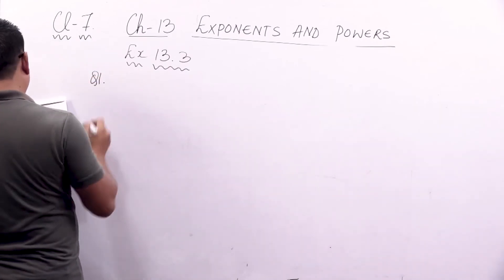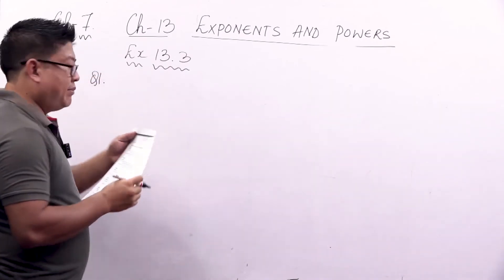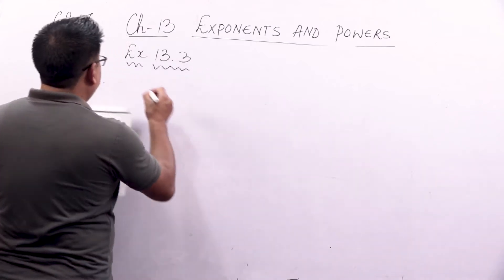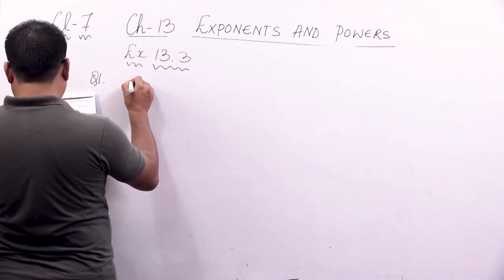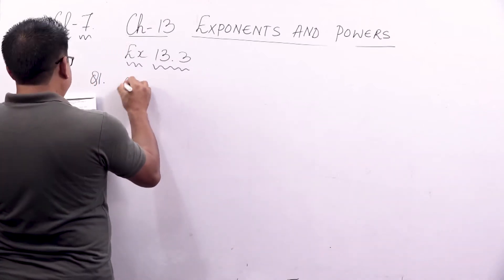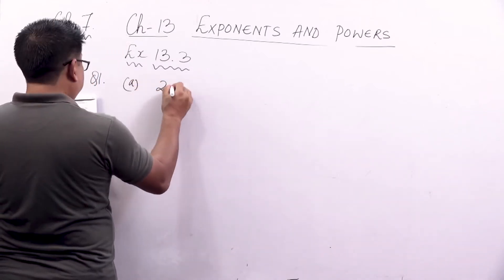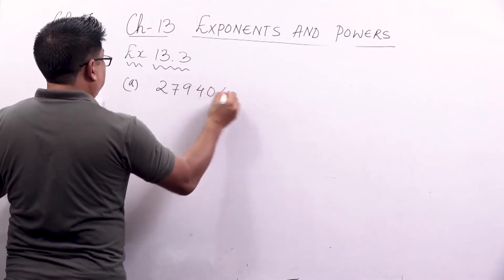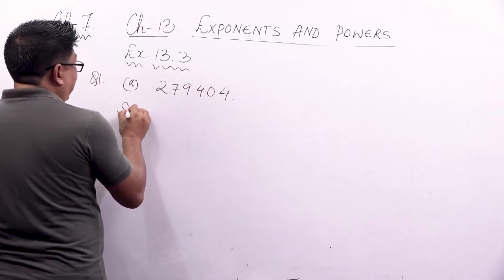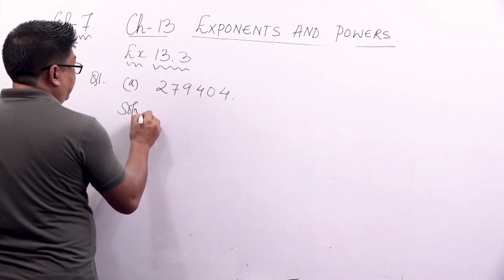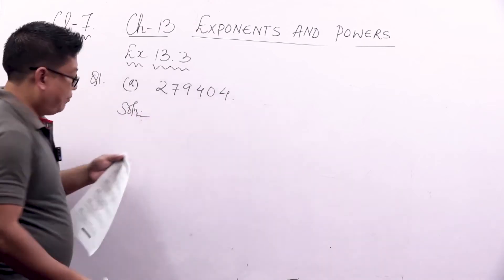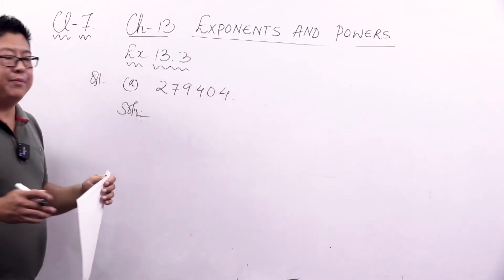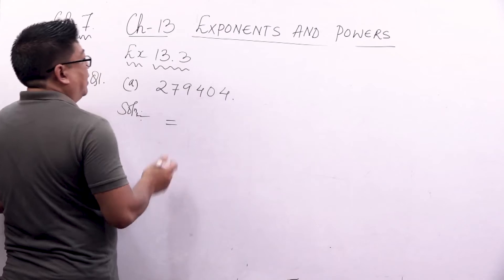Question number 1: write the following numbers in expanded form. We are going to write 279404 in expanded form. So to write this in expanded form, we will proceed in this manner.